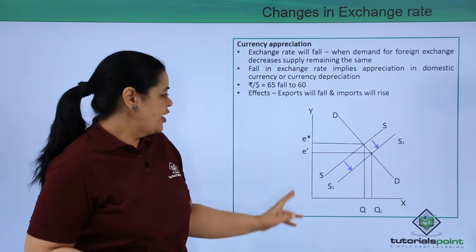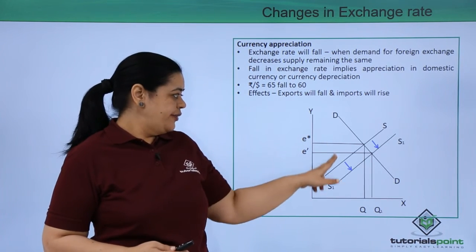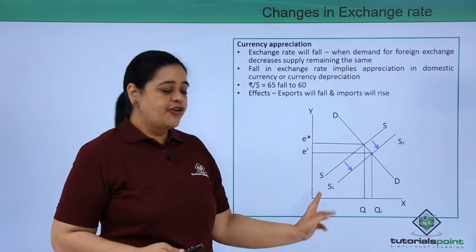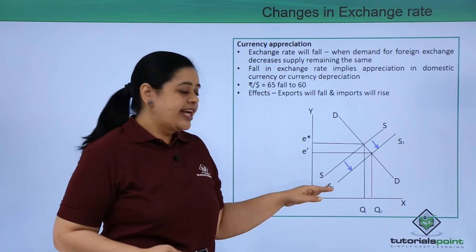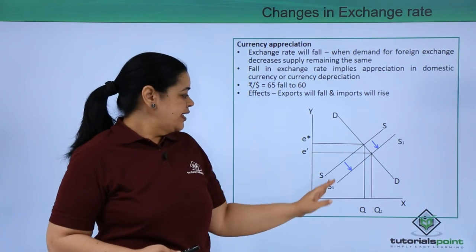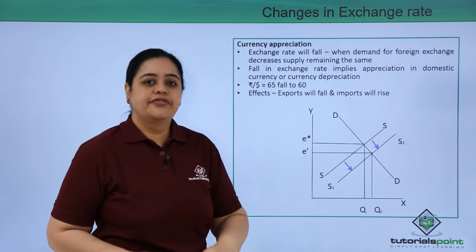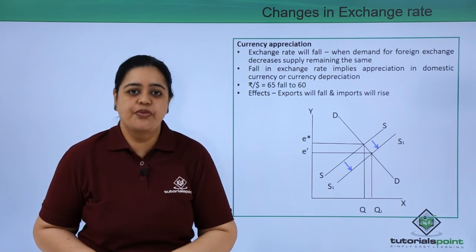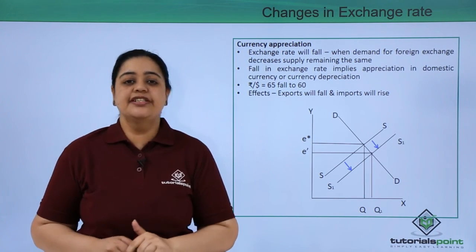Diagrammatically, from E*, the equilibrium will come to E dash. Why? Because the supply has fallen. The demand line remains DD, but the supply has fallen from S to S1. To bring the new equilibrium, the quantity will shift to Q1. So that is what currency appreciation is all about.